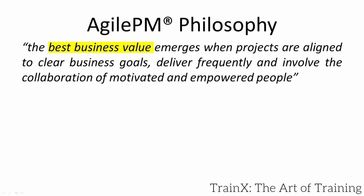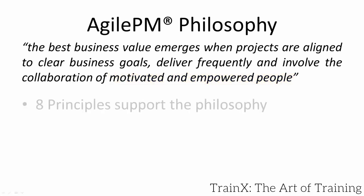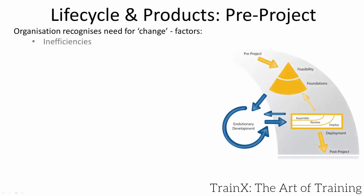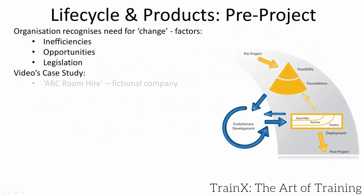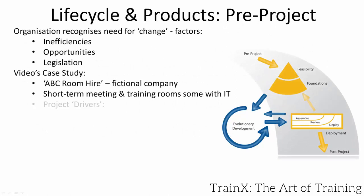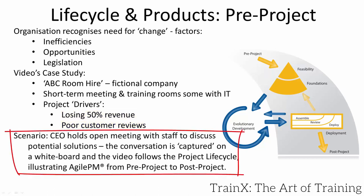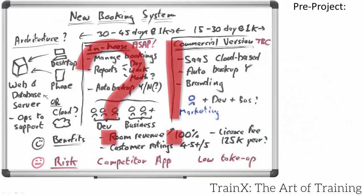The philosophy says we'll gain best value by understanding our real goals and then quickly putting a suitable solution in place. Keeping our people happy and focused will greatly improve our results. There are eight principles that support this, which we'll introduce as we work through the case study. Projects allow organisations to implement change. ABC are losing money from inefficient room scheduling and losing customer ratings. The CEO recognises change is needed, embraces Agile, and decides to hold a provisional workshop with colleagues to gain insights into solving the room booking issues.